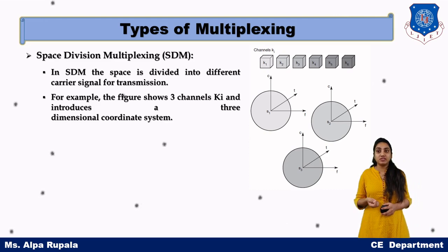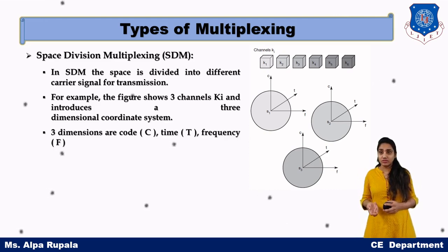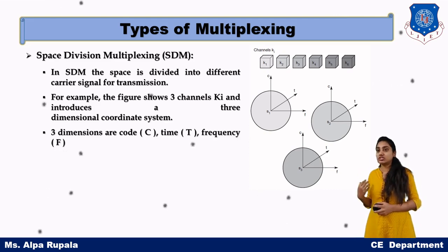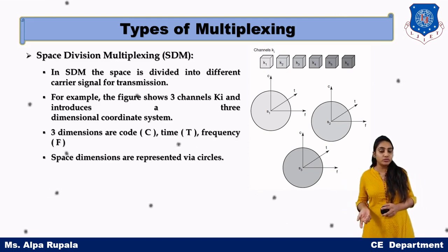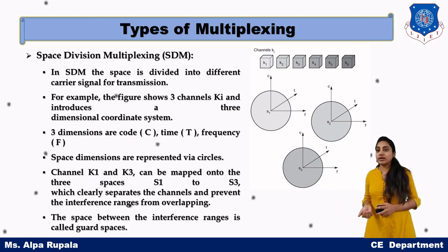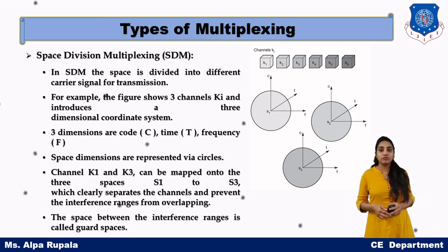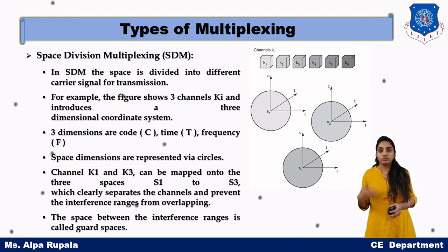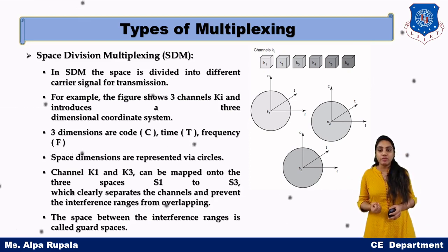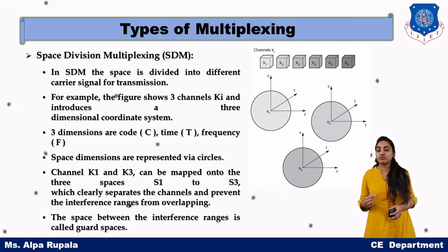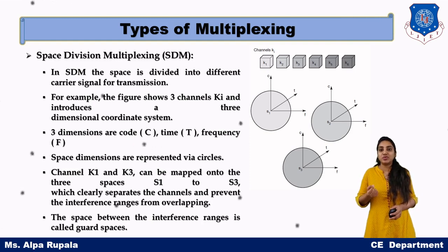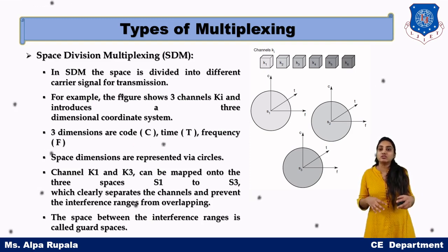In Space Division Multiplexing, the three dimensions used are time and frequency. To reduce interference, guard space is used. So interference is reduced in SDM through the spacing mechanism, or area spacing.